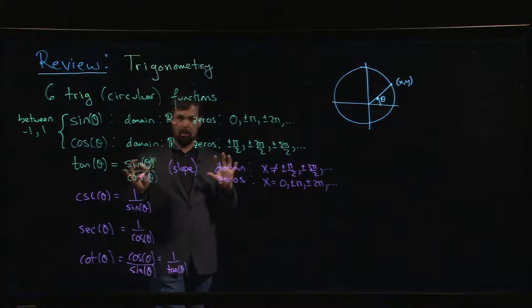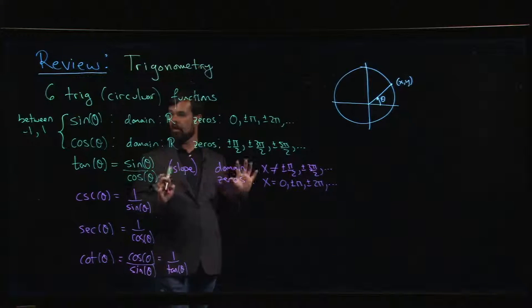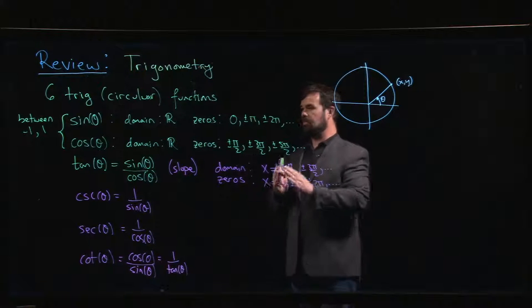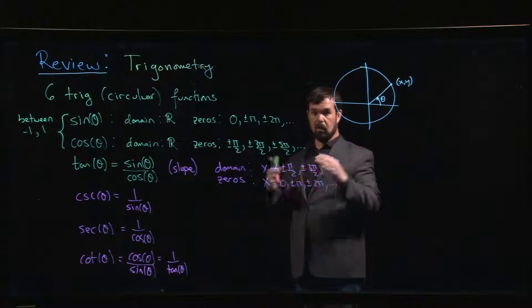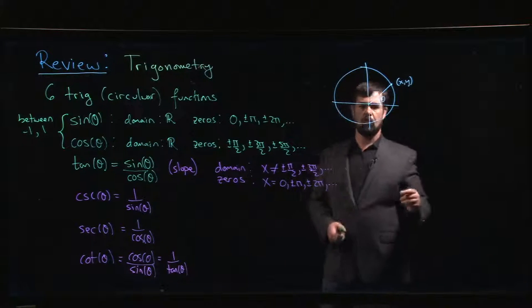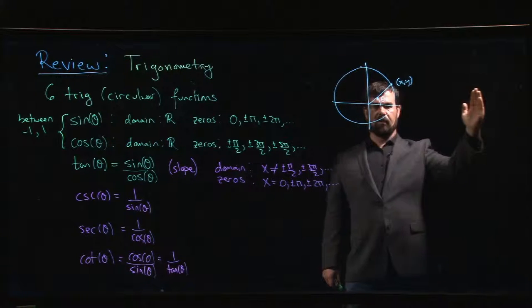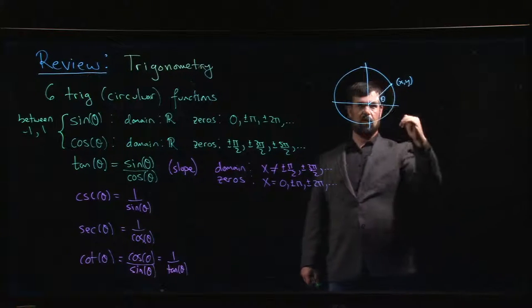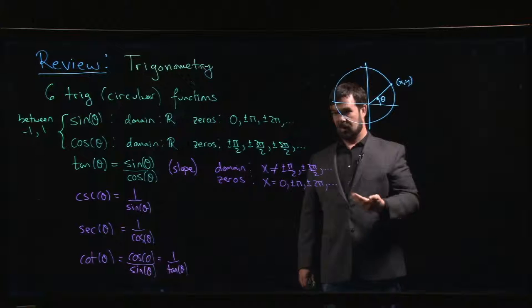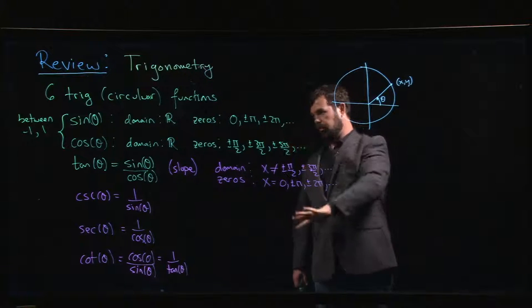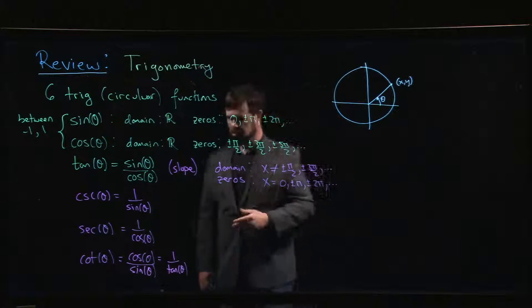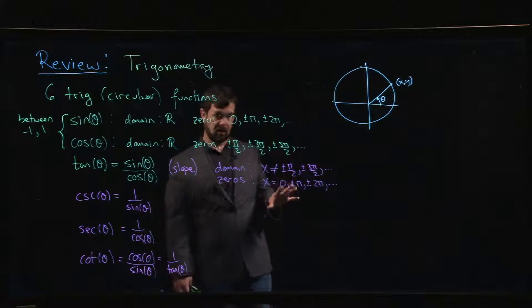In the next video we're going to briefly look at graphs for these six functions. Rather than thinking of them as functions of an angle, we're going to think of them as functions of a real variable and plot them in the Cartesian plane. As you go out along the x-axis — imagining that as your angle varying — you watch what happens to the x-coordinate and y-coordinate and plot those, generating the graphs. We'll give you a rough idea of what the graphs look like, since it's useful to have that picture in your head.